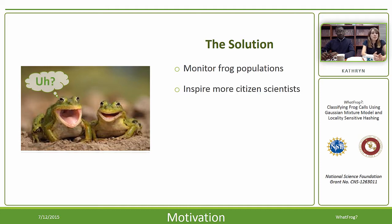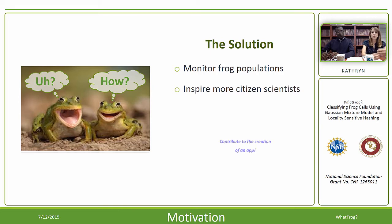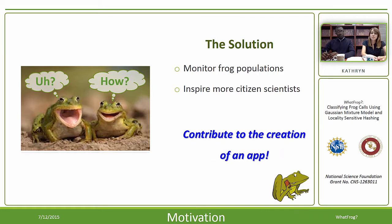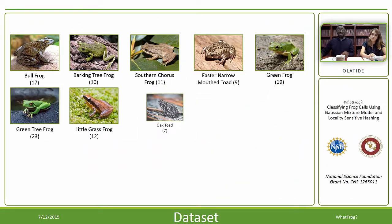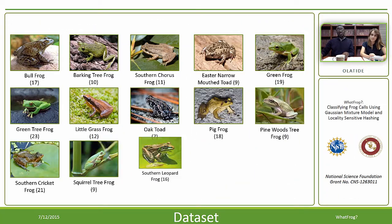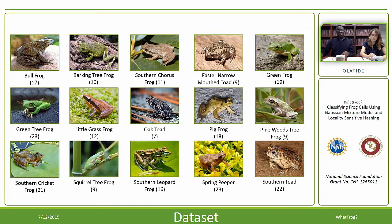Citizen scientists have been working for years to monitor frog populations using their frog calls. But this process requires expensive equipment and a lot of time commitment. So this summer, we are contributing to the creation of an application that will automatically classify frogs using the device that's already in your pocket. Our dataset from experimentation contains 126 frog calls across 15 species from Florida.